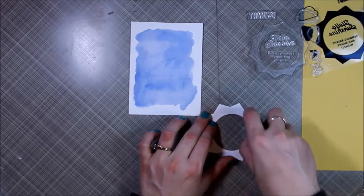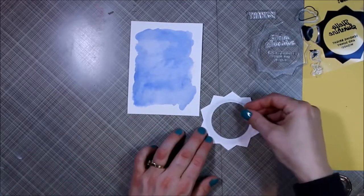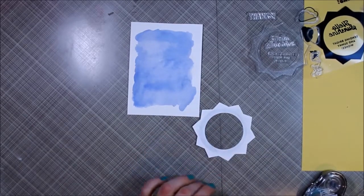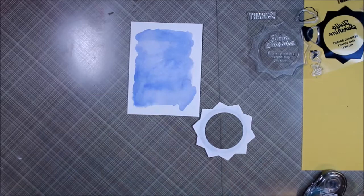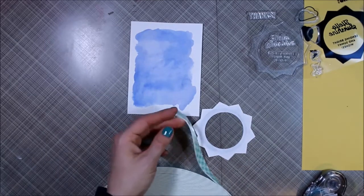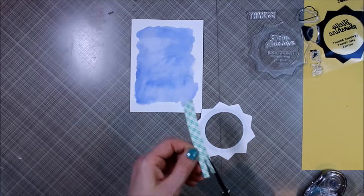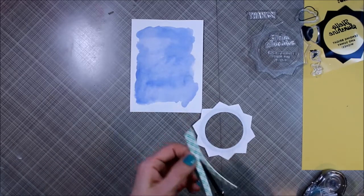Then I'm using some foam tape as the layer between, and this is a fun trick that I found. I'm going to trim the foam tape in half because I don't need the whole thickness. I've also found that if you tear the backing off, you can manipulate this foam tape a little bit.